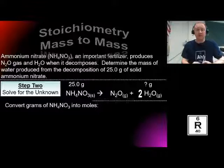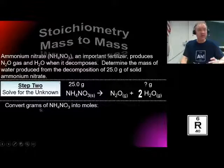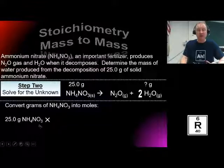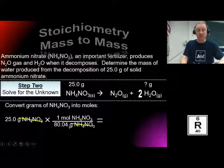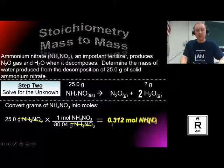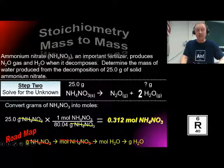Step one: convert the grams of ammonium nitrate into moles of ammonium nitrate. To do that, I need the molar mass of ammonium nitrate. Pause the video and use a calculator and your periodic table to determine the molar mass. So, 25 grams of ammonium nitrate multiplied by the molar mass — I'll put grams on the bottom so they cancel out. The sum of one nitrogen, four hydrogens, another nitrogen, and three oxygens is 80.04 grams per mole. This gives 0.312 moles of ammonium nitrate.